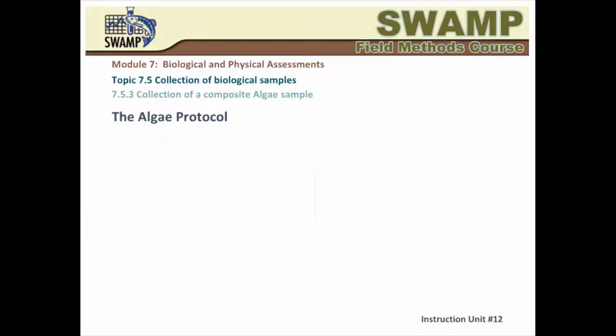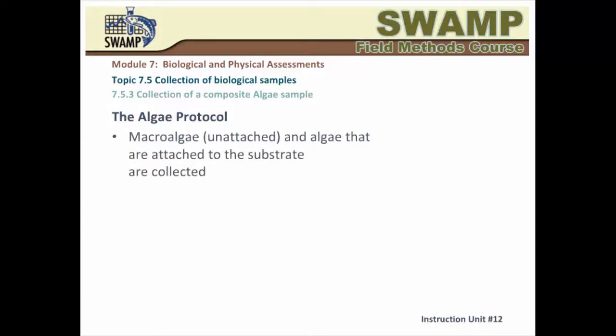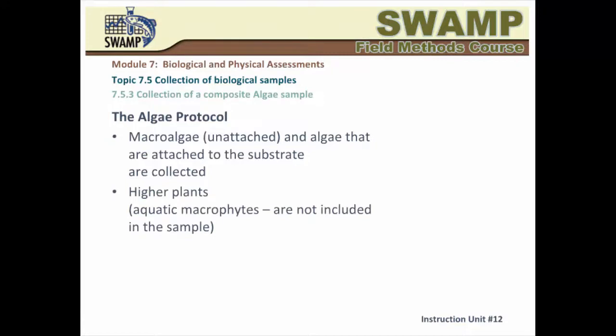Algal indicators — algal cover, chlorophyll A, AFDM, and taxonomic composition — can be included in the bioassessment effort based on your project's goal. The SWAMP algae protocol is focused on filamentous or unicellular algae and cyanobacteria that are normally attached to the substrate, or unattached floating algal mats that have been attached in the past. Higher plants, such as water chestnut and other aquatic macrophytes, are not included in the sample.